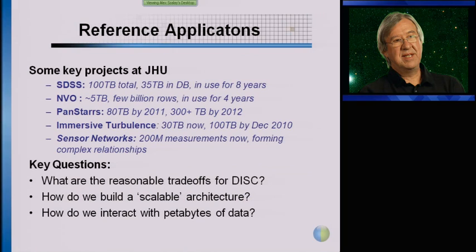Some of our reference applications include the Sloan Digital Sky Survey, the National Virtual Observatory, and recently PanSTARRS. I'd like to talk in more detail about our work in turbulence and sensor networks, because these are key areas where we are starting to see bridges with traditional high-performance computing and observational projects emerging. The key questions are: what are the reasonable trade-offs for data-intensive computing, and how do we build a scalable architecture?